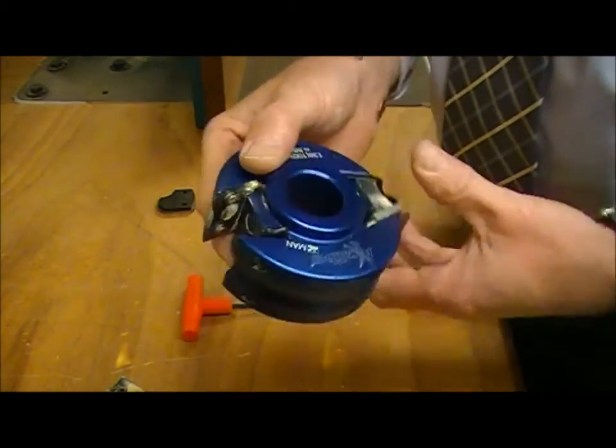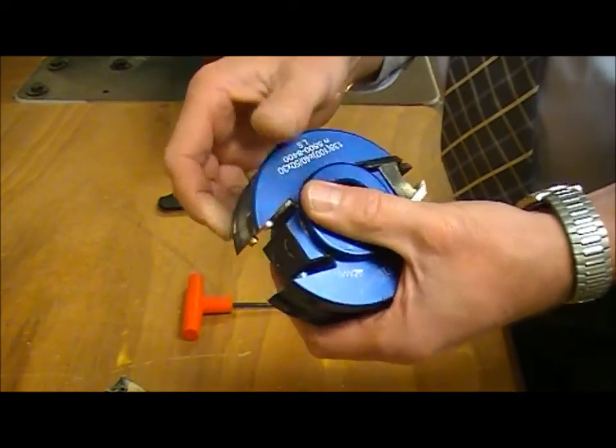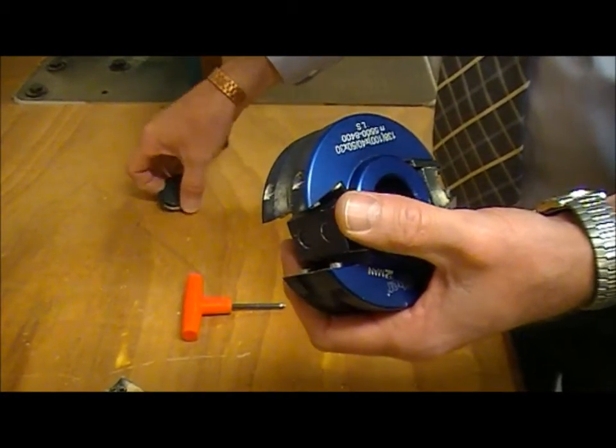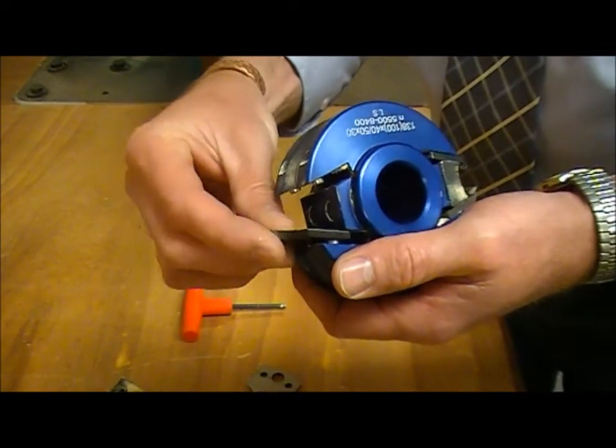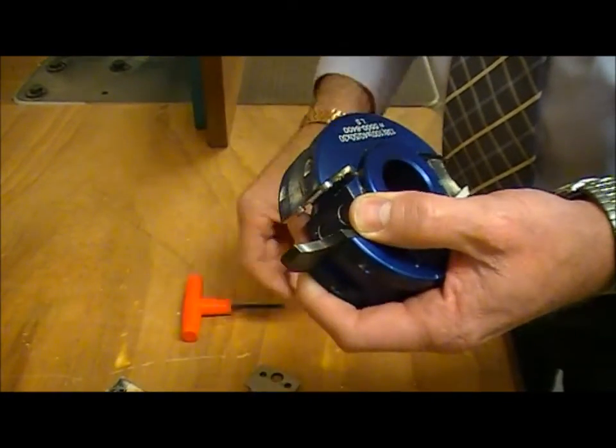Repeat the same on the other side. So again, the limiter goes in first, followed by the cutter.